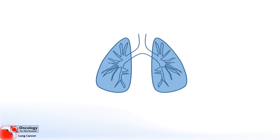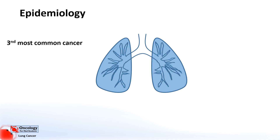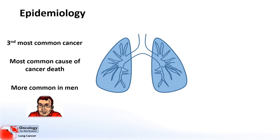Firstly I want to cover epidemiology — in other words, who gets lung cancer and why? Cancers of the lung are very common; in fact they're the third most common type of cancer behind breast and prostate, and they make up about 13% of all cancers diagnosed. In addition, they're the commonest cause of cancer death. Lung cancers are slightly more common in men, but the rates are falling in men and slowly catching up in women. It's also more common in older patients, with around 60% of those diagnosed over the age of 70.